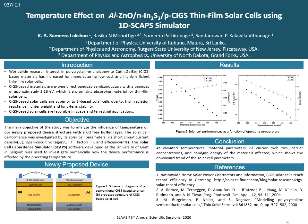Figure 2 shows that short circuit current density increased and open circuit voltage decreased as the operating temperature increased. The open circuit voltage is the most affected solar cell parameter among the parameters of interest. As the temperature rises, the band gap of the semiconductor material decreases, so more photons are involved in creating more electron-hole pairs, which results in increasing short circuit current density. On the other hand, open circuit voltage decreases with rising temperature because it is directly associated with saturation current density.